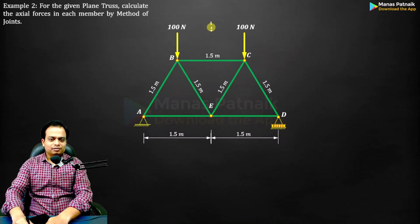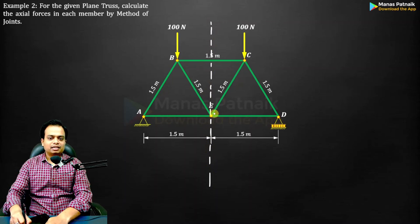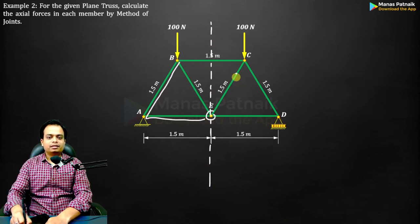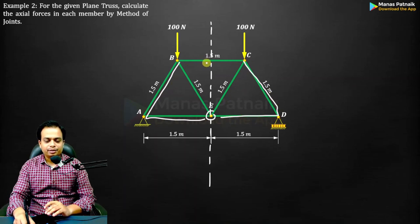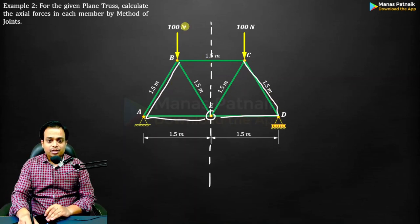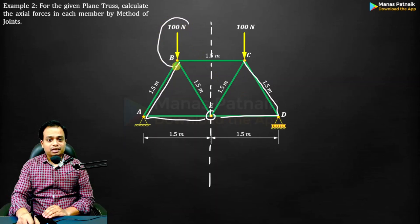Doesn't it look as if this entire structure is symmetrical about a vertical axis passing through E? Whatever structure you have on this side, the same structure you have on the other side — exact mirror images. Not just the structure, but the loadings as well.